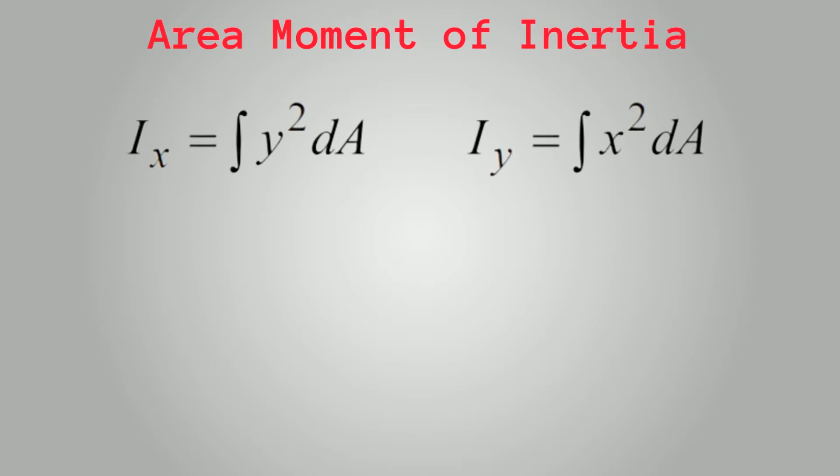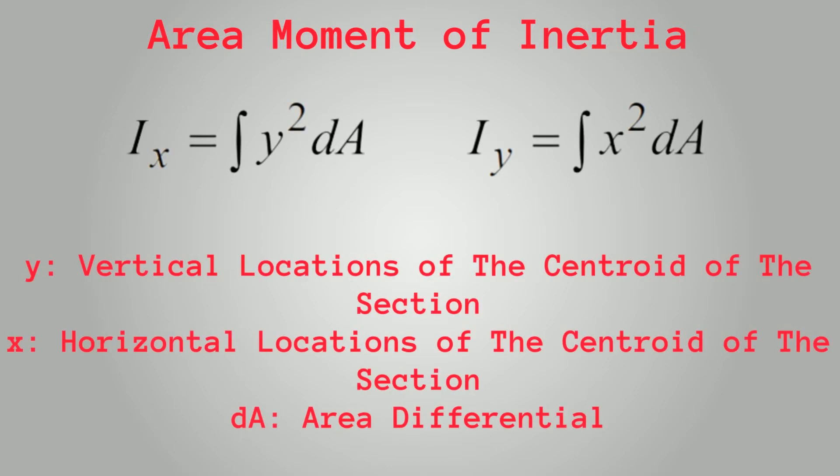The general equation of area moment of inertia Ix or Iy are given by those two integrals, where x and y are the locations of the centroid of the section. However, for most structural engineering applications, Ix and Iy are already calculated and tabulated for the ease of design.